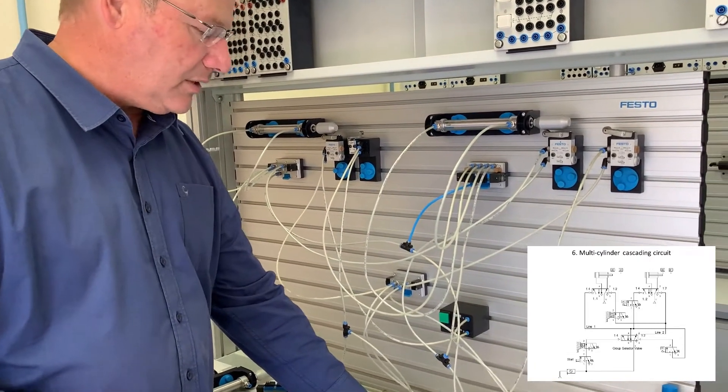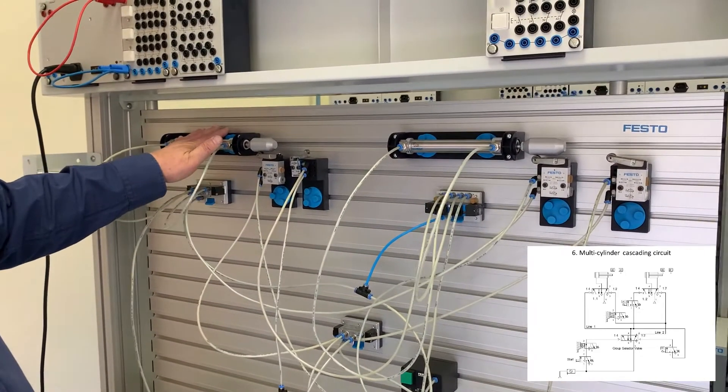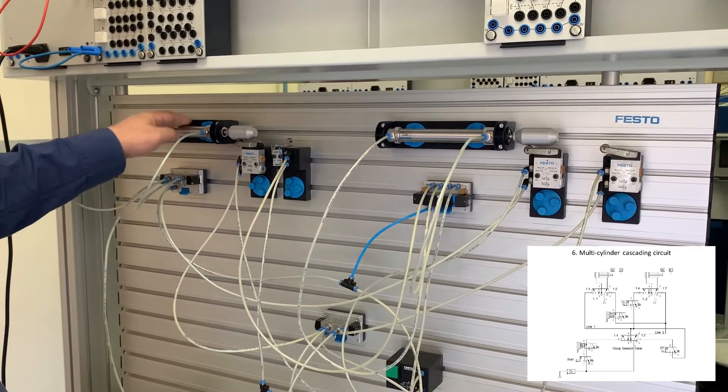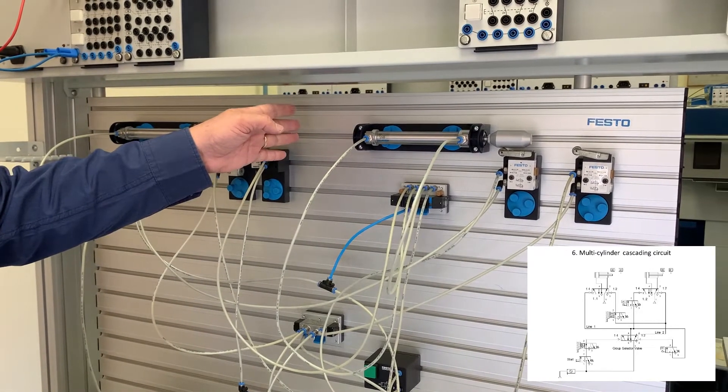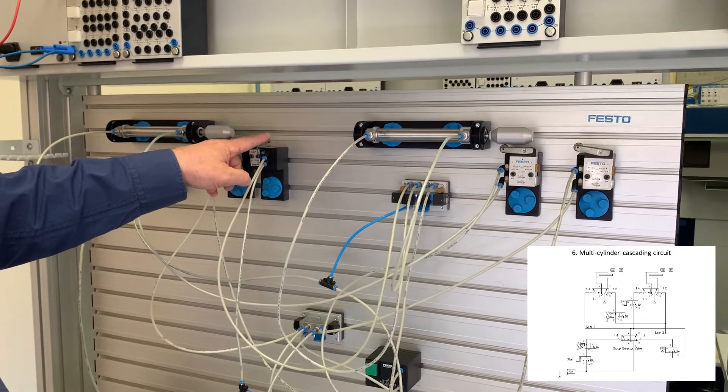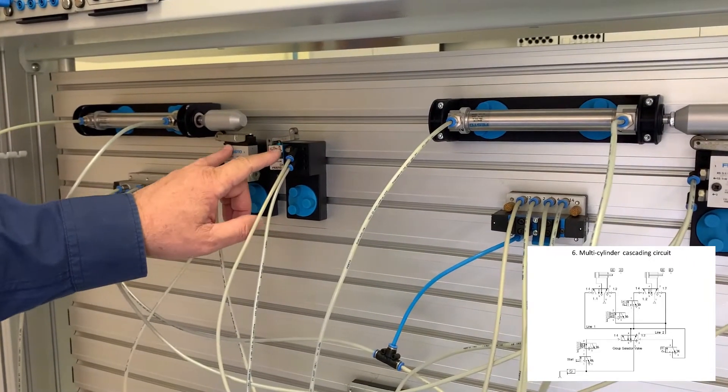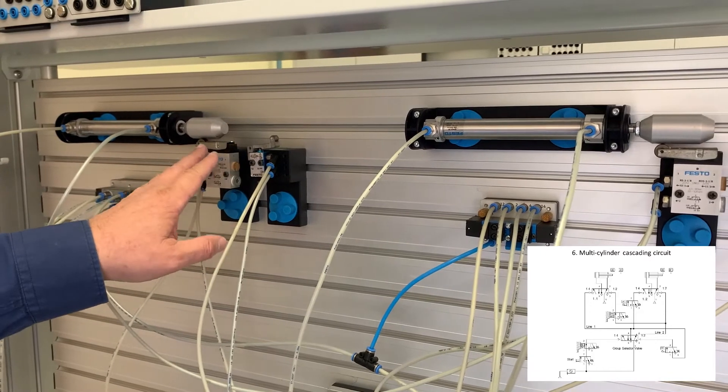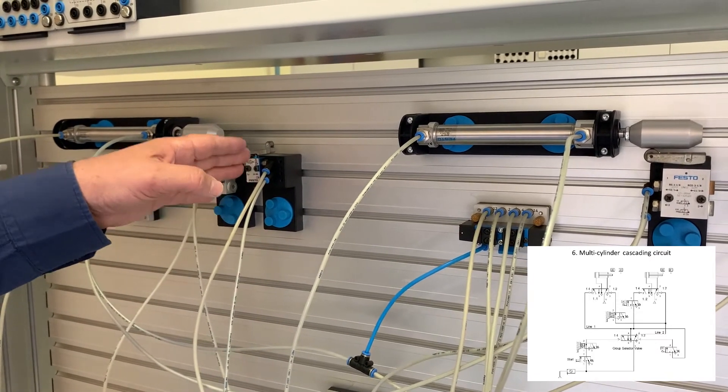So the sequence of this particular circuit is that cylinder A which is the left hand one, that one will move out. Then when it gets to the end it will activate this limit switch. And remember we call them by the cylinder name so this is A0 and A1. So when it activates A1 cylinder B will start moving out so that will move out to its extended position and that's B0 B1.